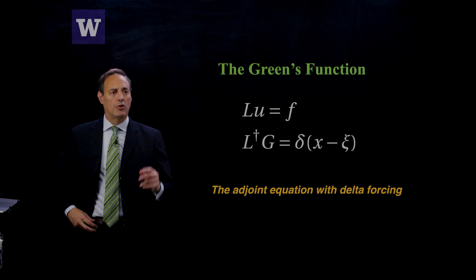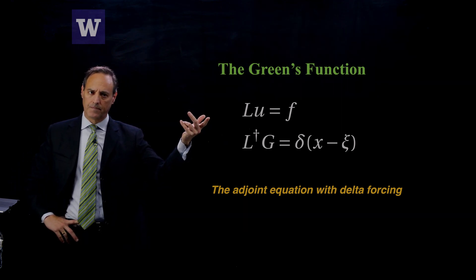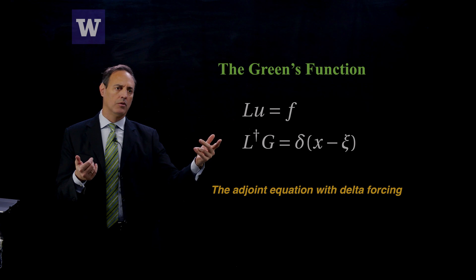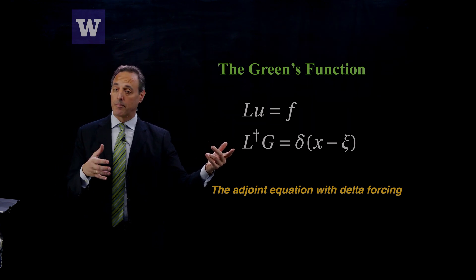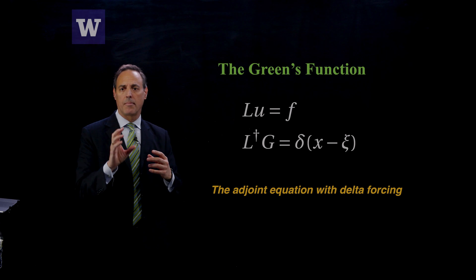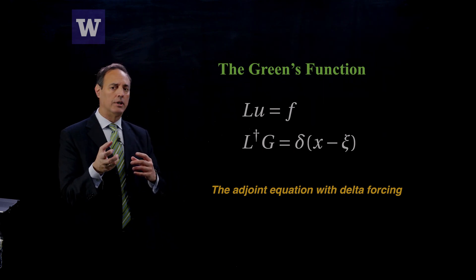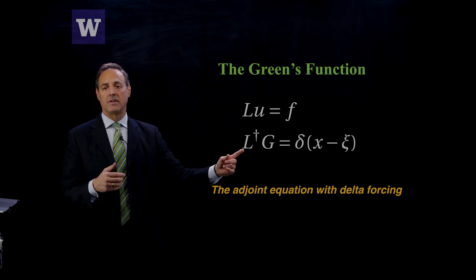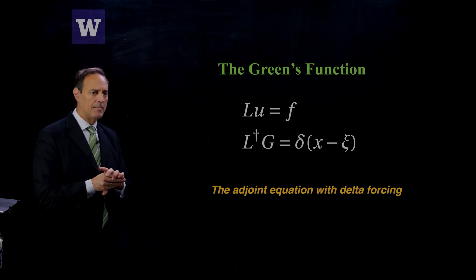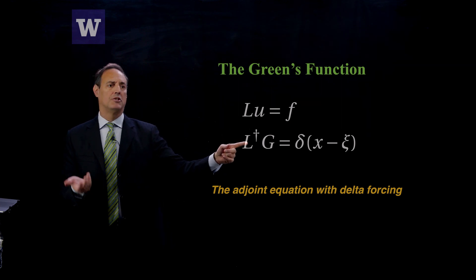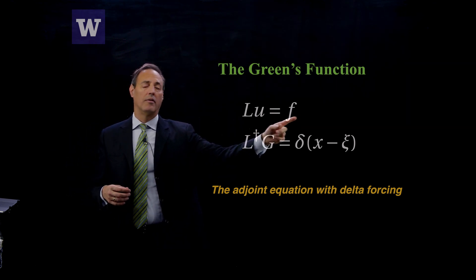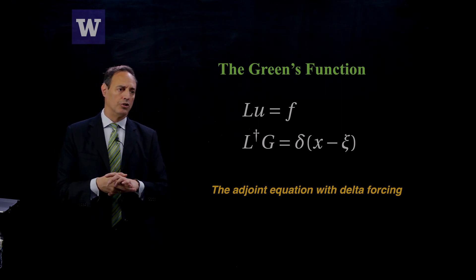I want to remind you that for the Green's function, what we're trying to solve is L u equals f. What we do is we posit a second problem — the Green's function solution — which satisfies L-dagger g, the adjoint problem, equals a delta function. We take the inner product of L u equals f with respect to g, and then we can write down our solution, which is just the integral of f against g.